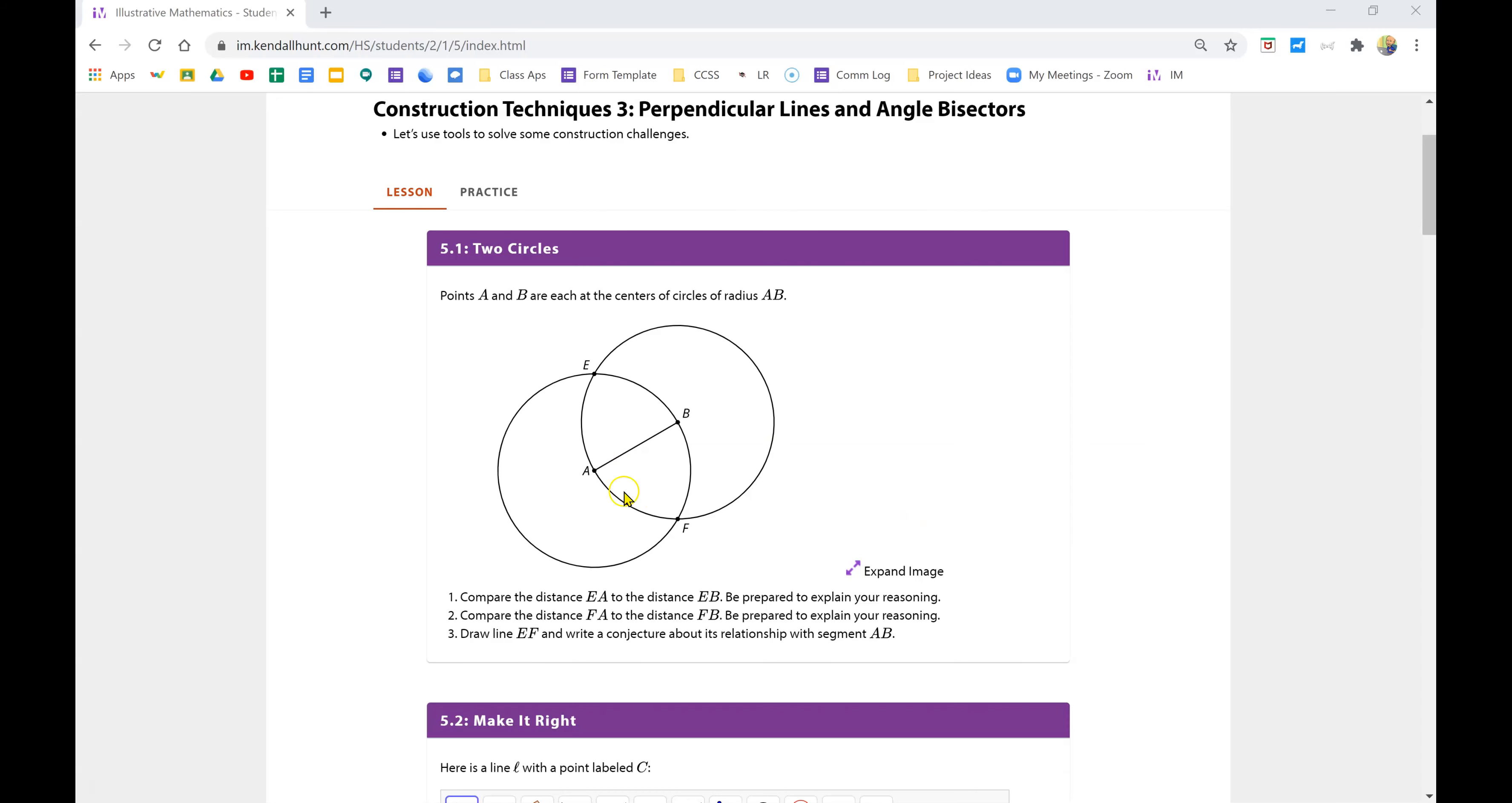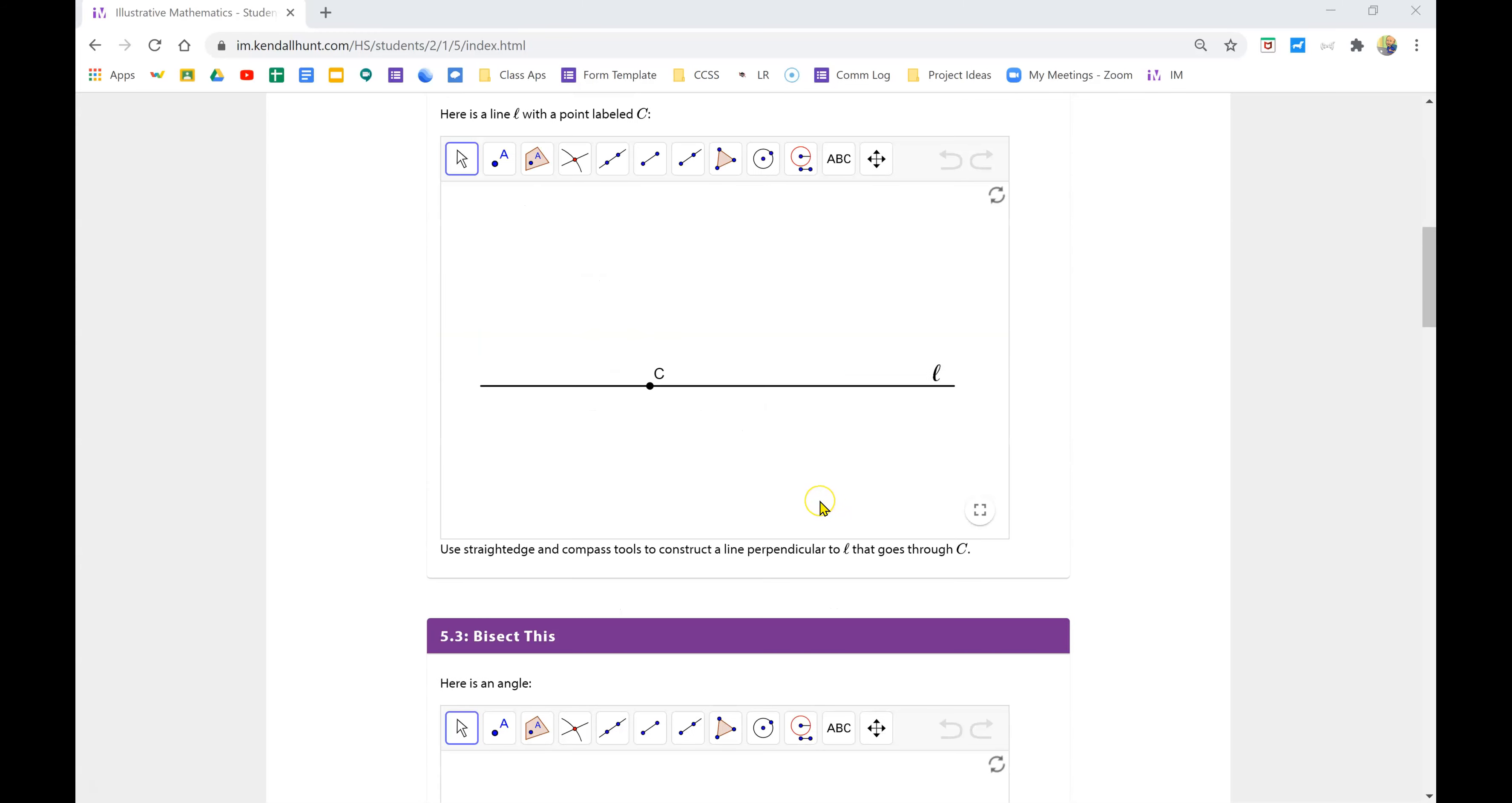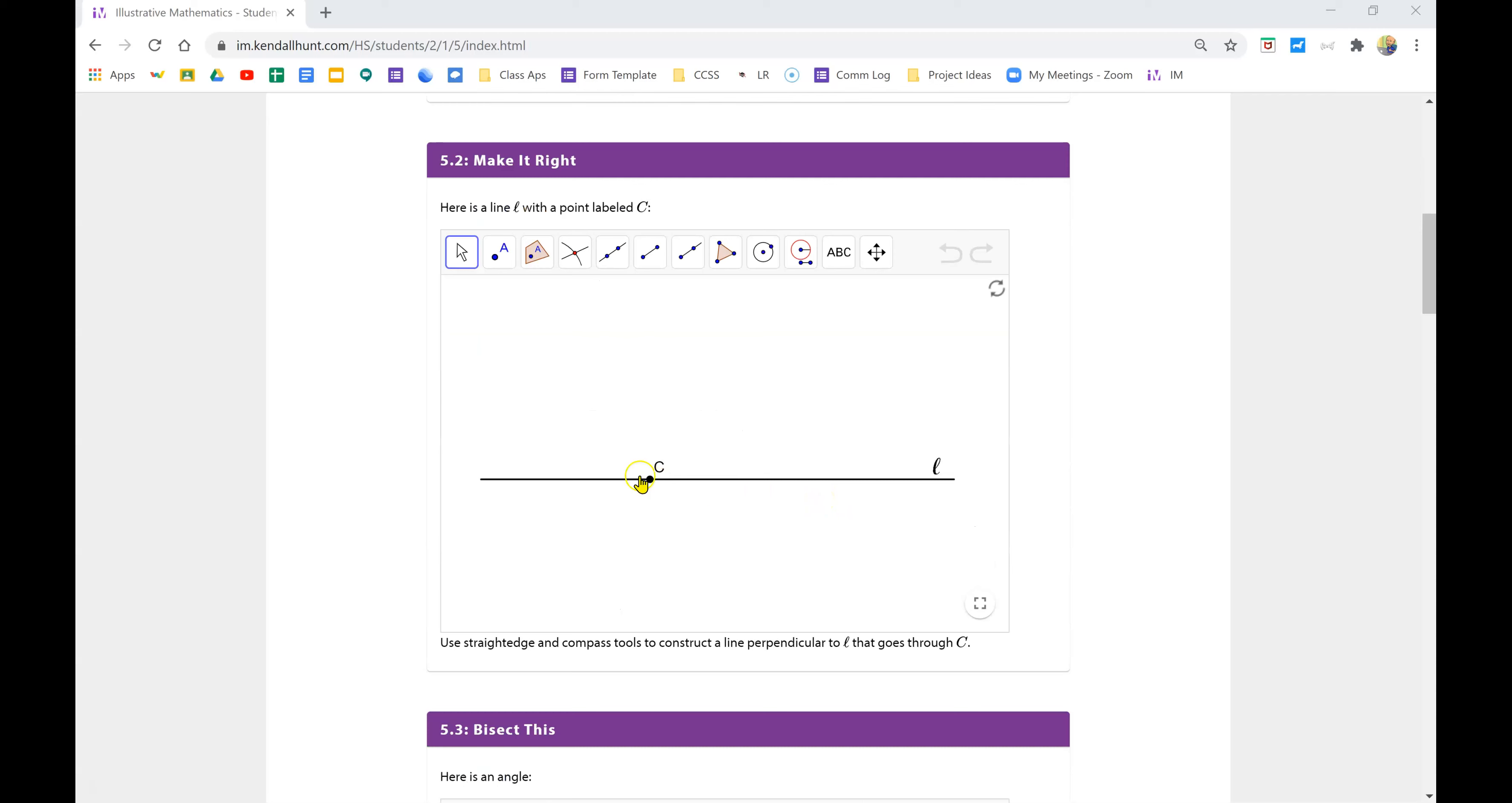Angle, segment, bisector, perpendicular bisector. The next step actually lets you interact and gives you a line L with a point C on the line. What you're supposed to do is use a straight edge and compass to construct a line perpendicular to L that goes through C.